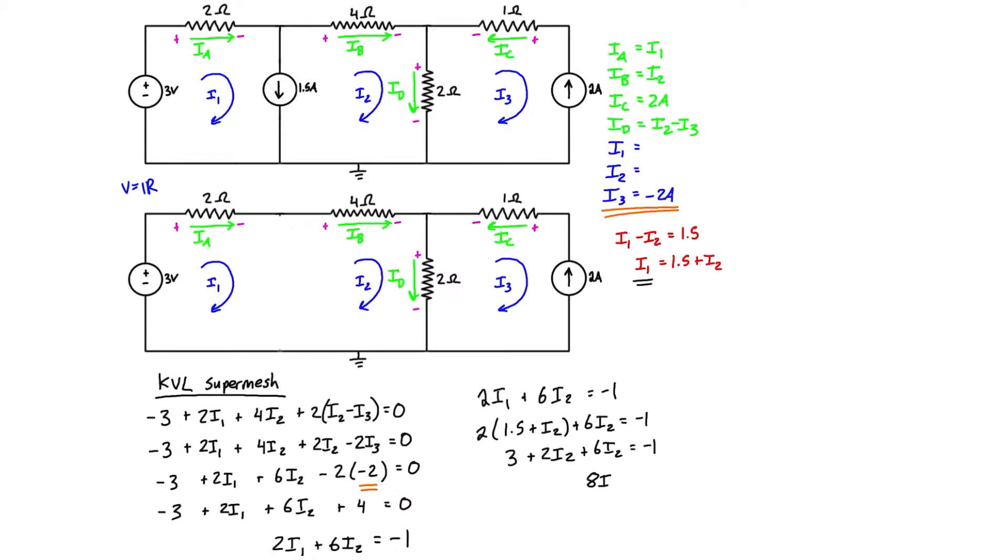Then what we can do is we can take this i2 and directly plug it back into this expression. So we just have i1 is equal to 1.5 plus negative 0.5 amps, and i1 is just equal to 1 amp. If you were asked just to find the mesh currents, then we have them: i1 is equal to 1 amp, i2 is equal to negative 0.5 amps, and i3 is equal to negative 2 amps.